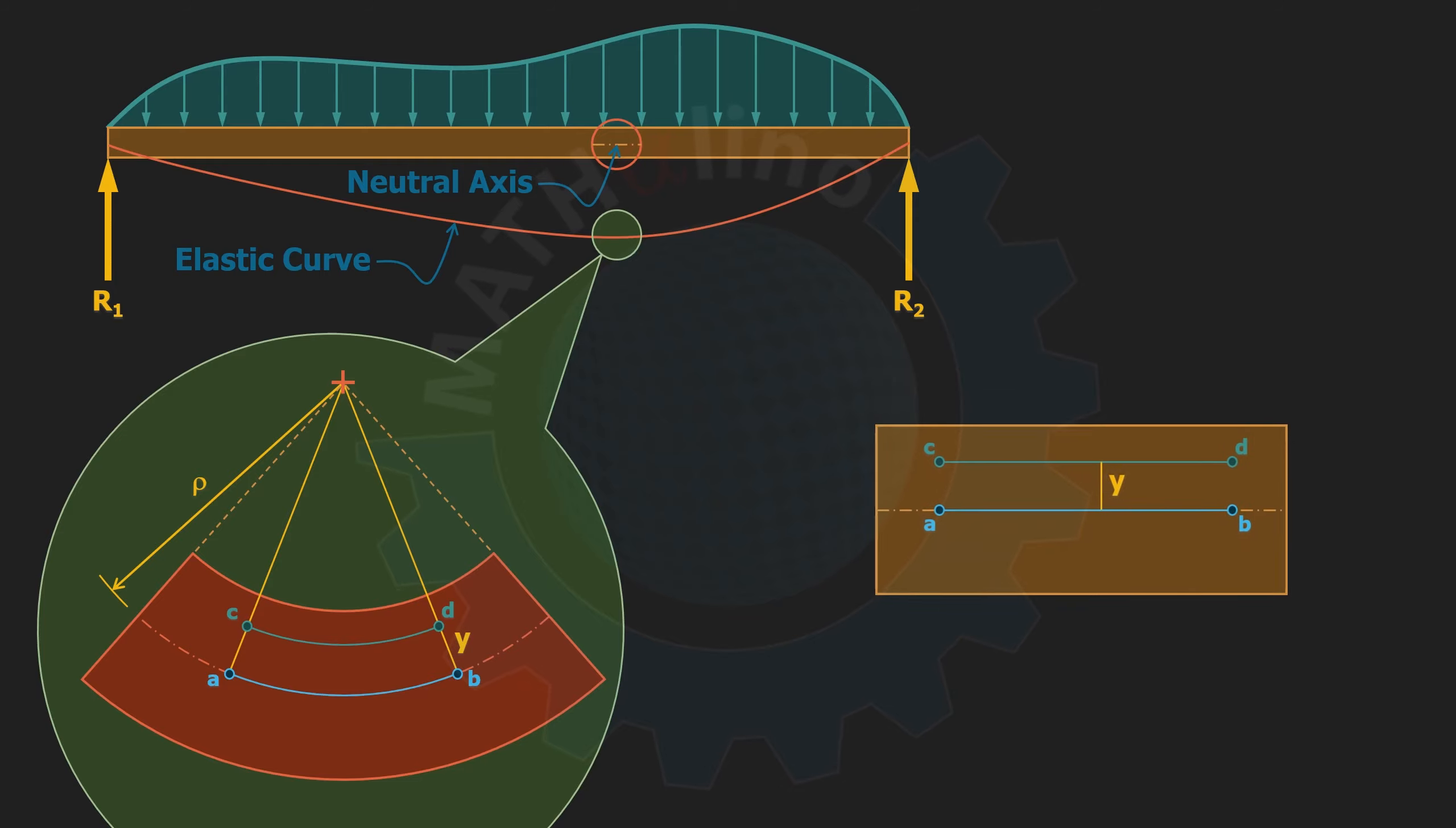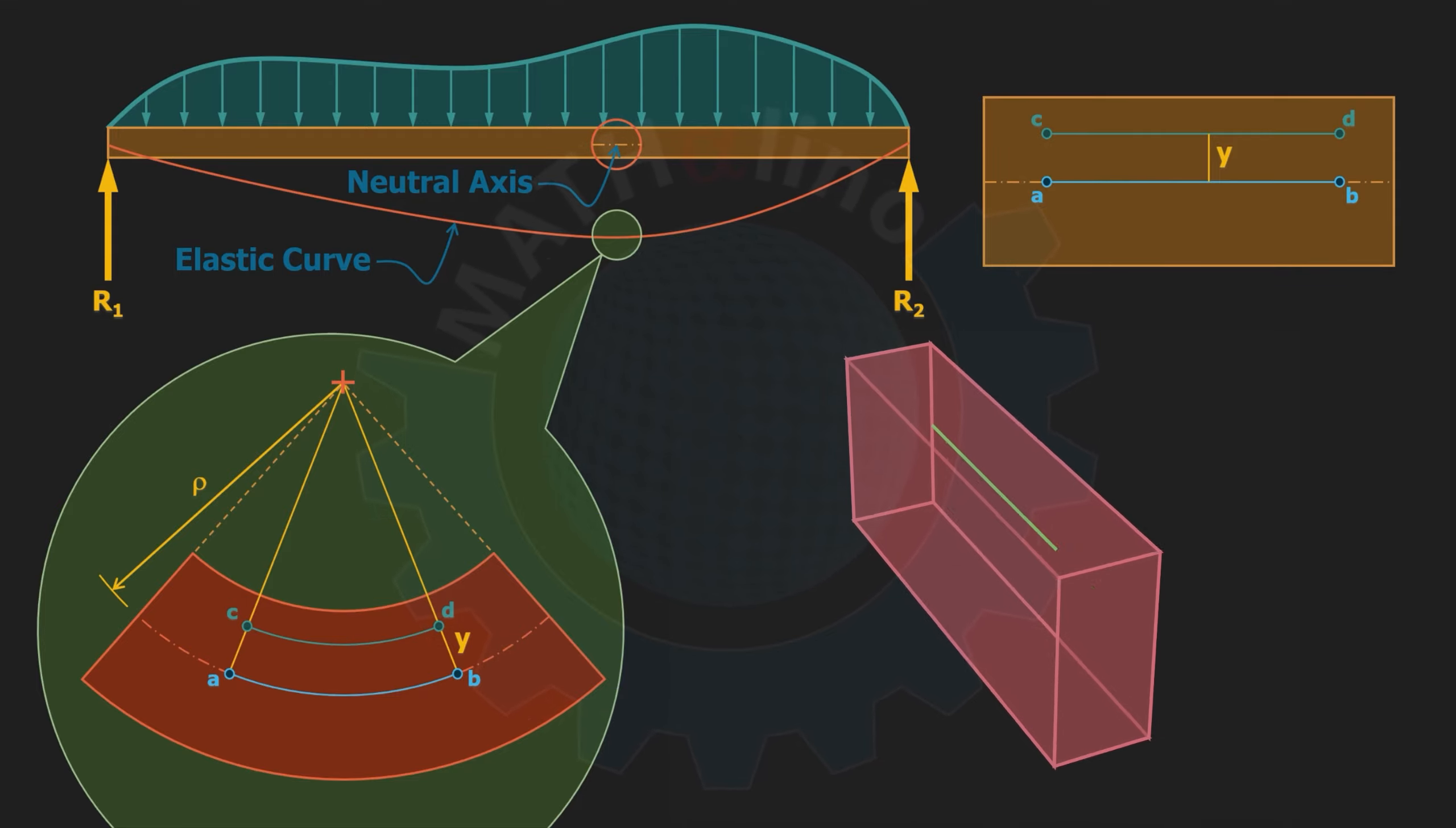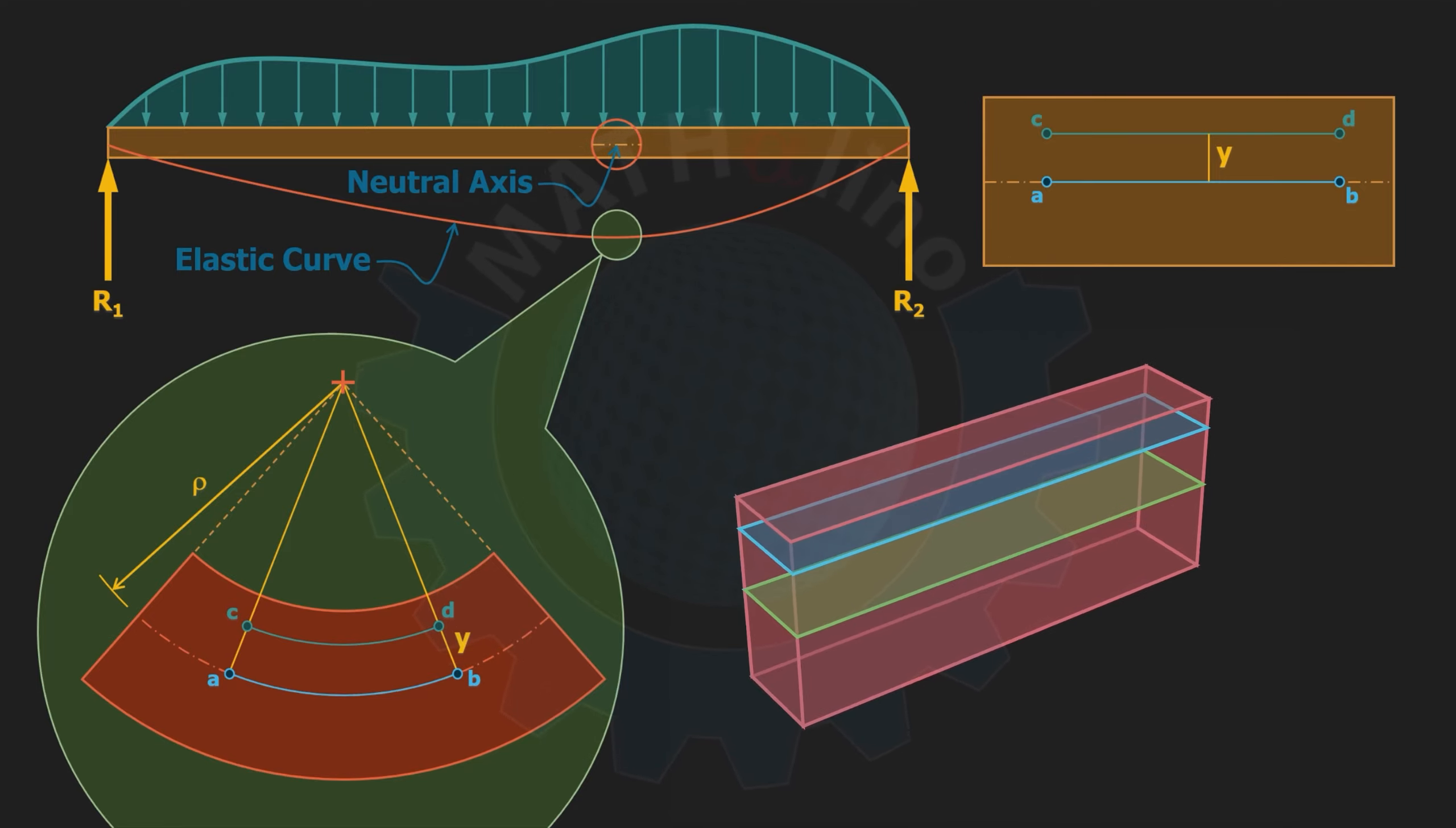For the sake of easy visualization, let us take the cross section to be rectangular. This is our neutral plane and this is the plane at distance y above the neutral surface.